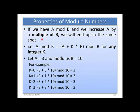If we have a mod b and we increase a by a multiple of b, we will end up in the same spot. This is one important property of modulus numbers: a mod b equals (a + k·b) mod b for any integer k. For example, if a is 3 and modulus b is 10: with k = 0, 3 mod 10 = 3; with k = 1, (3 + 1·10) mod 10 = 3; with k = 2, (3 + 2·10) mod 10 = 3. Adding multiples of the modulus always gives the same result.